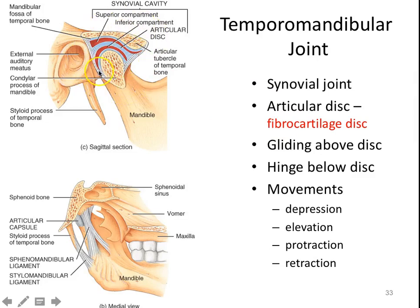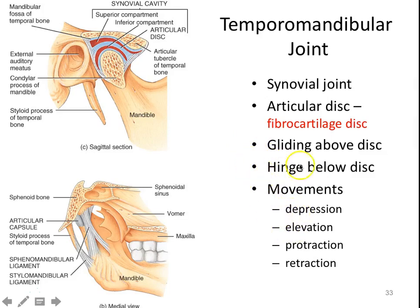Here's our temporomandibular joint. You'll notice there are ligaments holding your mandible in place, and you can see the actual synovial cavity. There's an articular disc splitting that cavity into two compartments — a superior compartment and an inferior compartment. Your mandible can do elevation, depression, protraction, and retraction. Depression and elevation are hinge movements; protraction and retraction are gliding movements. It's basically this disc in those two compartments that allows for those different movements to occur.